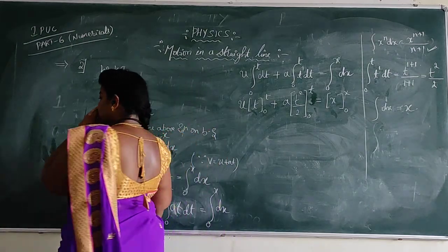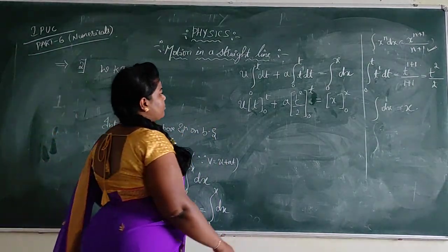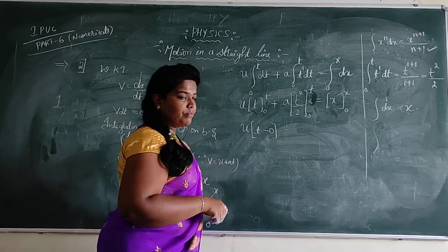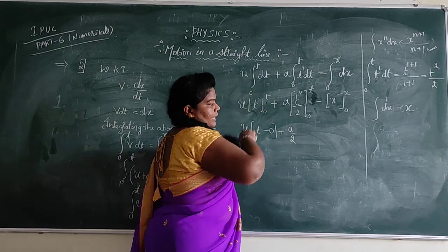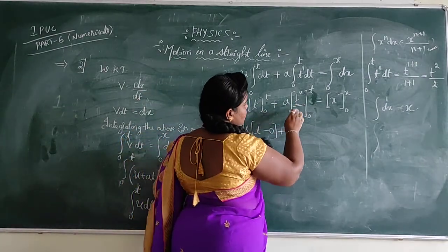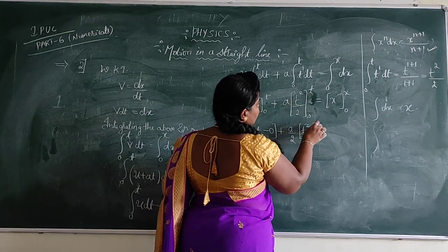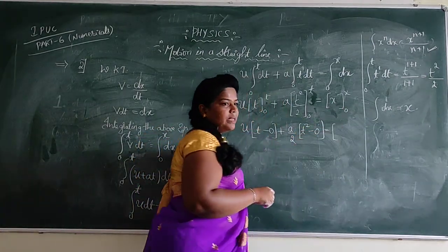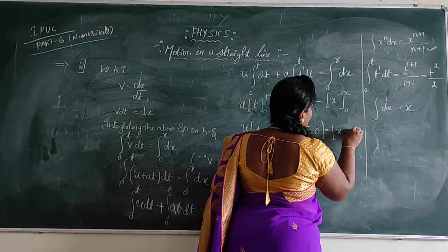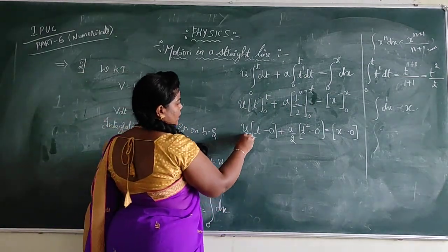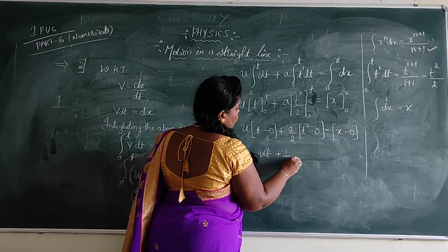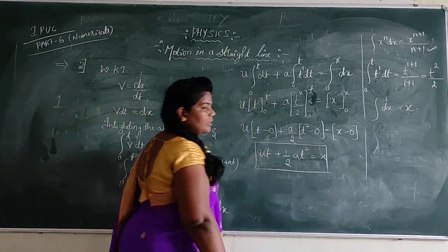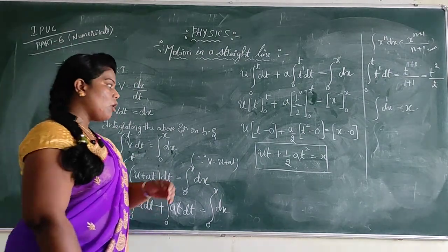Now dear students, apply the limits — upper limit and lower limit. 0 plus A by 2, taking 2 outside, here it is T square. Apply the upper limit: it becomes T square, minus lower limit 0 square, which is 0 itself. Apply the upper limit in place of X, that is X, and apply the lower limit which is equal to 0. U into T becomes UT plus 1 by 2 A into T square, which is equal to X minus 0 is X itself. Finally we got the second equation of motion: X equals UT plus half AT square.